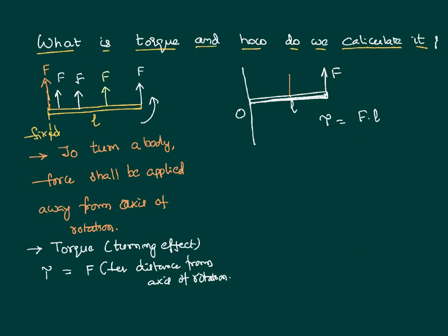If instead the force F is applied at a distance of only half the rod's length, then torque dash equals F times l/2. Therefore the torque is less in the second case, and as the torque is less, the rotation is also less.